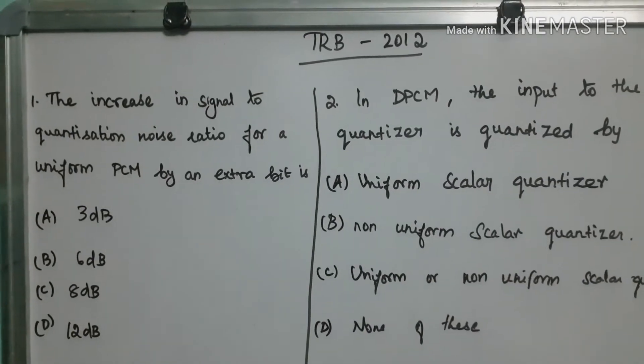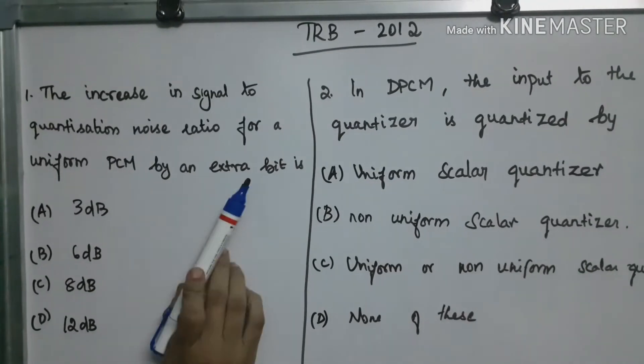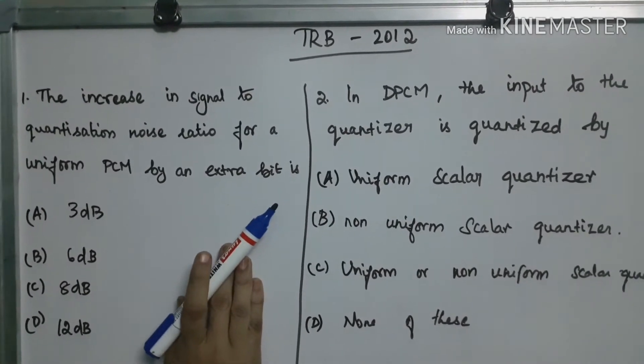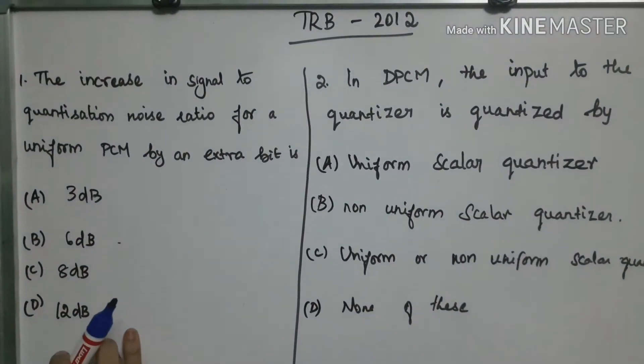The increase in signal to quantization noise ratio for a uniform PCM by an extra bit. The options are: 3 dB, 6 dB, 8 dB and 12 dB.